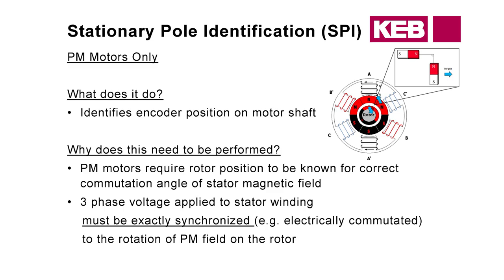The SPI is only done for permanent magnets. This comes down to how the permanent magnet motor works and how the rotor is magnetized. The drive needs to know where the rotor is in relation to the motor poles — the pole pairs. That's why we do the encoder learn, so it can electrically commutate the correct stator magnetic field angle to maintain 90 degrees between the rotor and stator for maximum torque output.